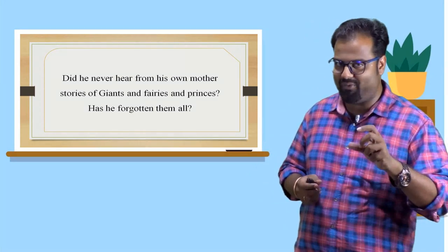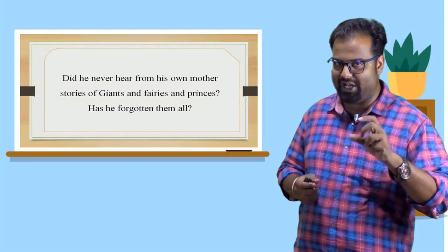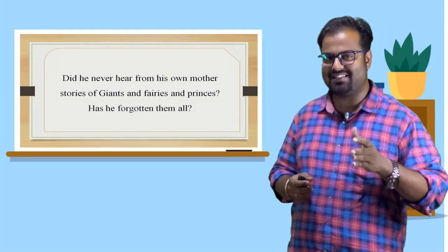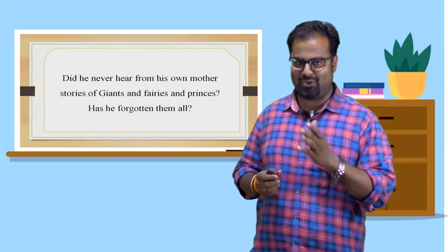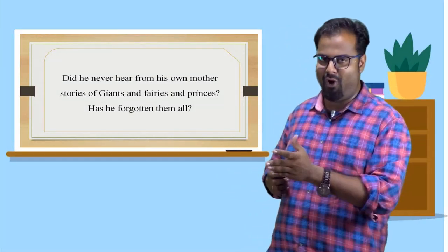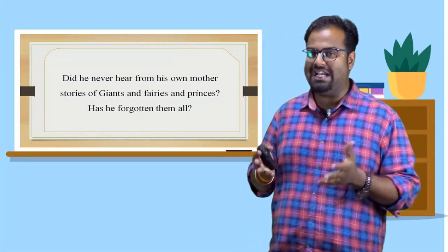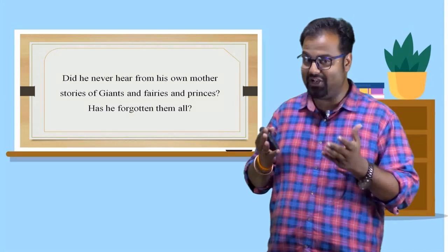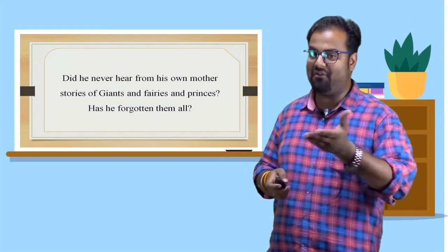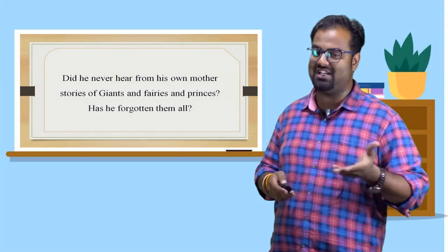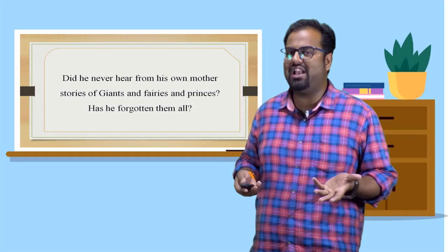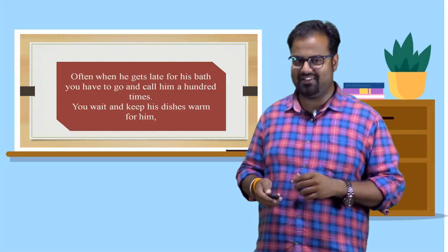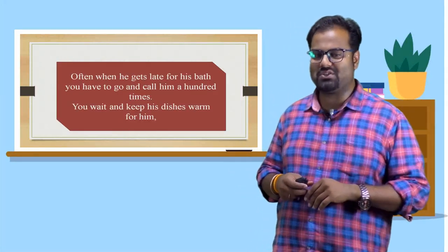Did he never hear from his own mother stories of giants and fairies and princesses? Has he forgotten them all? So, now we have a clue. The child in the poem likes what kind of stories? He likes the stories of giants. He likes the stories related to folklore. He likes fairy tales. That is very confirmed. Look at the line. Did he never hear from his own mother stories of giants and fairies and princesses? Has he forgot them all? He never told me a story like that. This is the question.